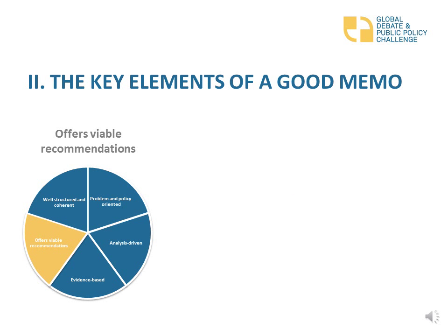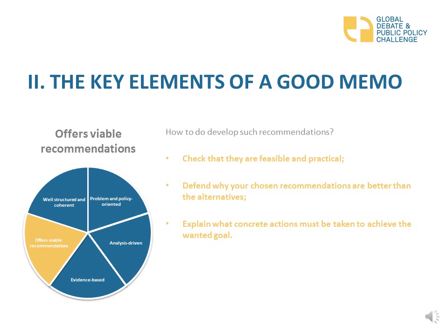Your memo should offer viable recommendations. Broadly speaking, the goal of a policy memo is threefold: highlight the problem, analyze the current state of affairs, and argue for a specific course of action. In terms of developing recommendations, check that they are feasible and practical, defend why your chosen recommendations are better than the alternative, and explain what concrete actions must be taken to achieve the wanted goal.